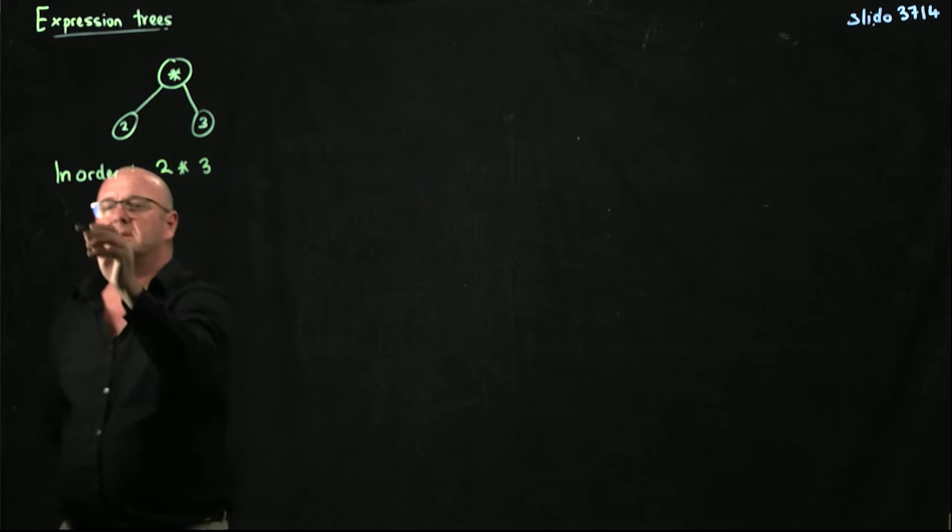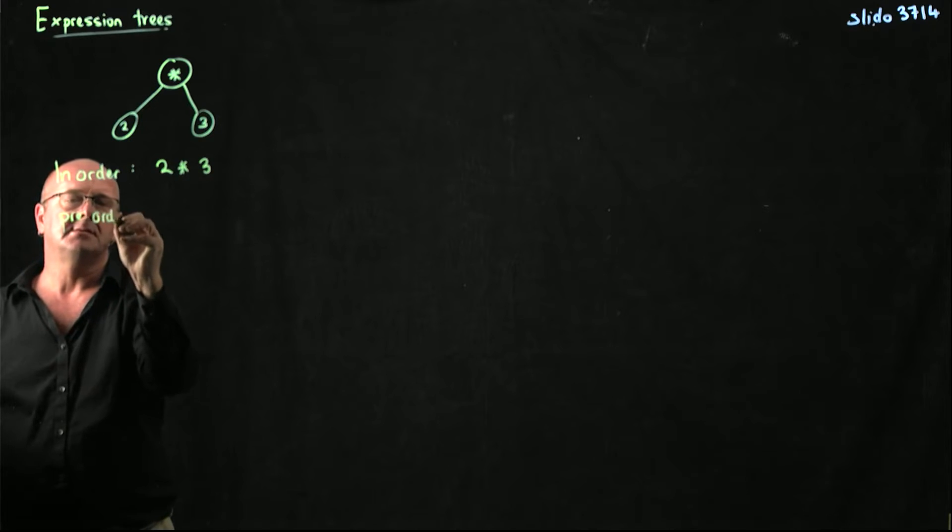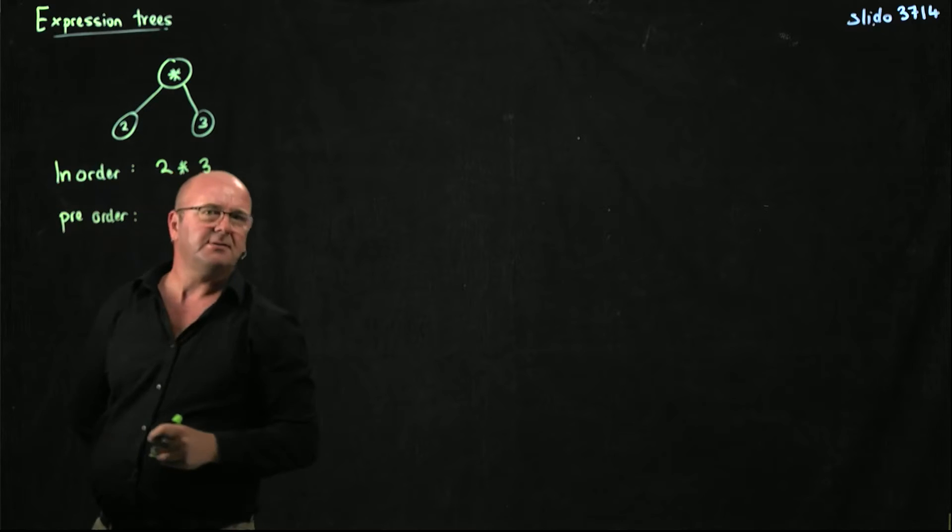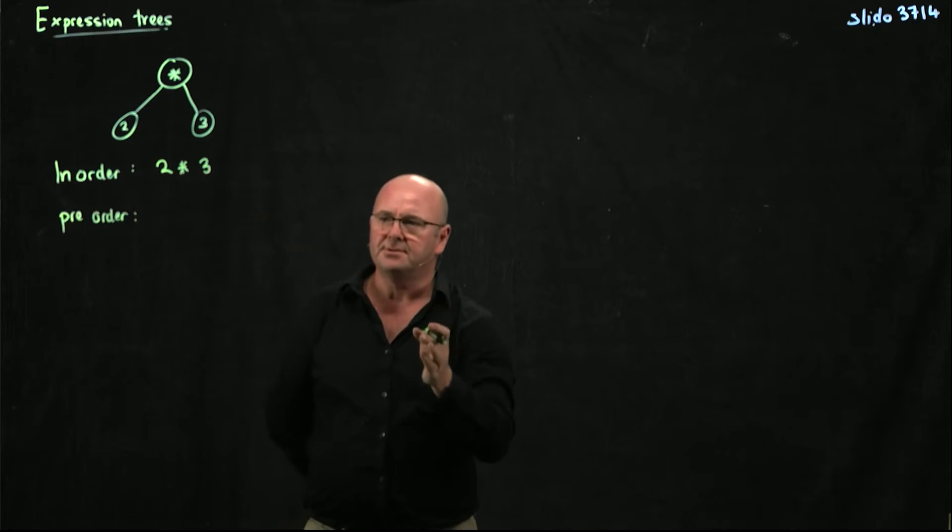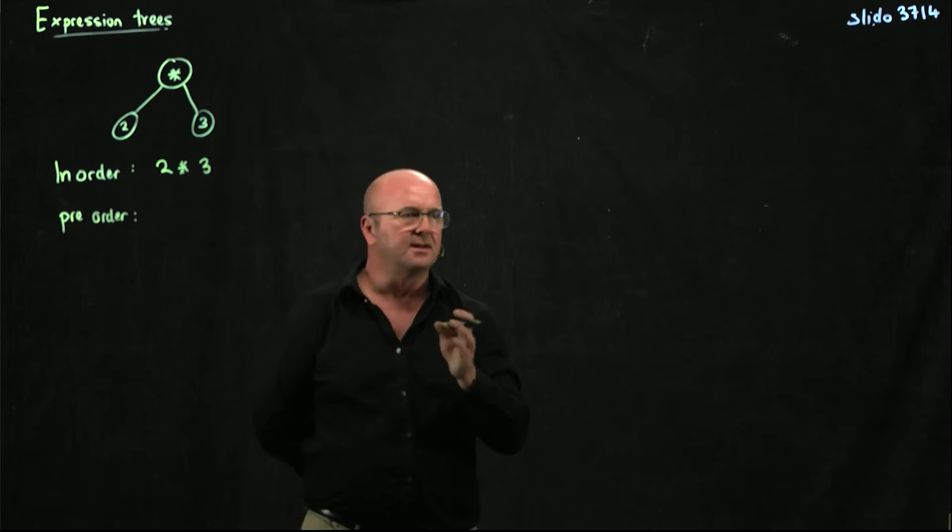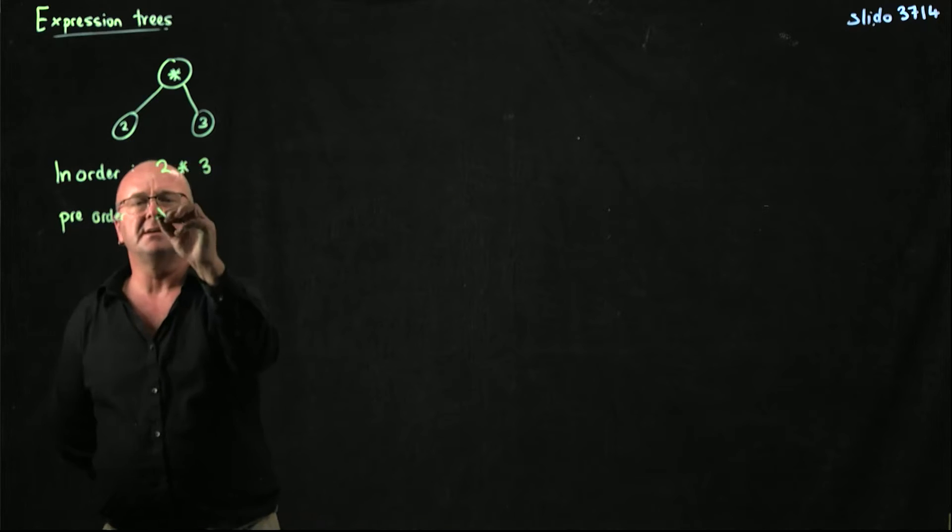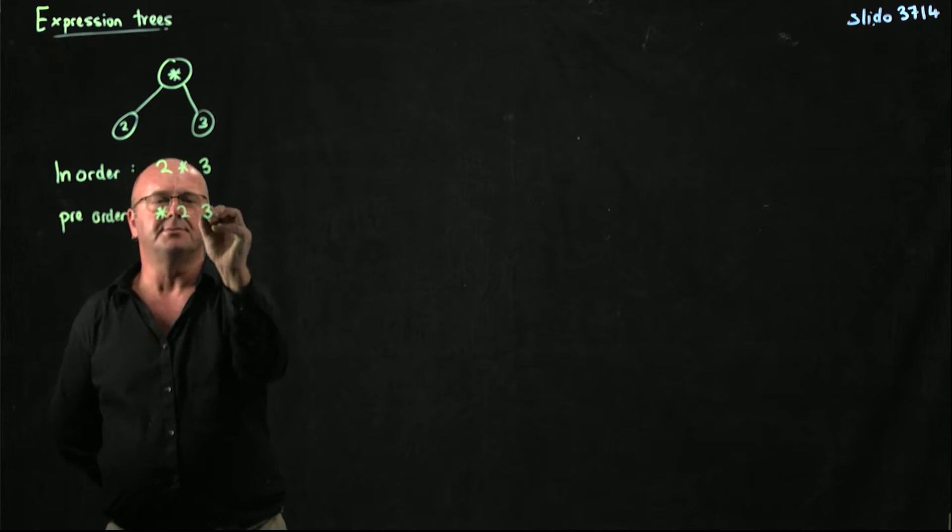I can do a pre-order traversal, and so in a pre-order traversal, I visit the root, and then I visit the left, and then I visit the right. And so that would give me times two, three.